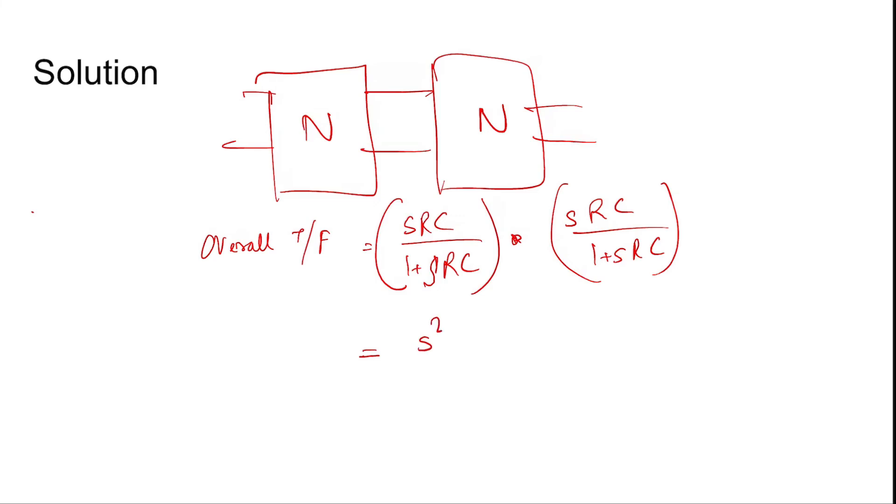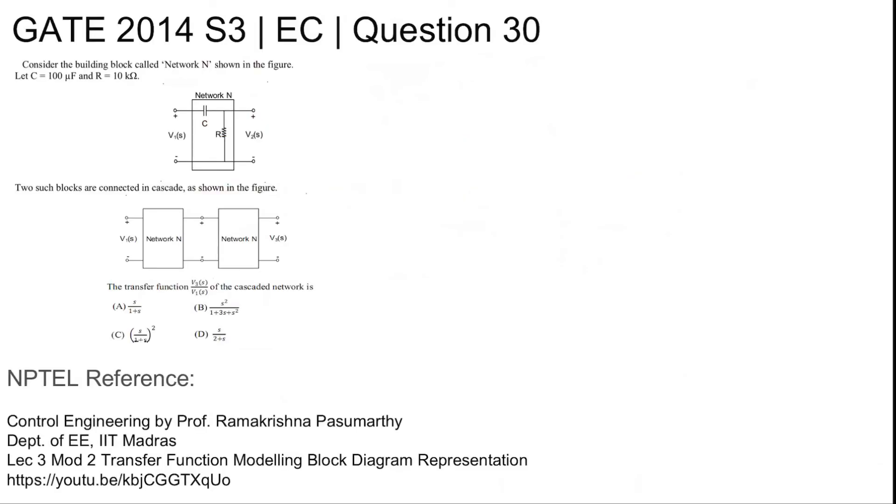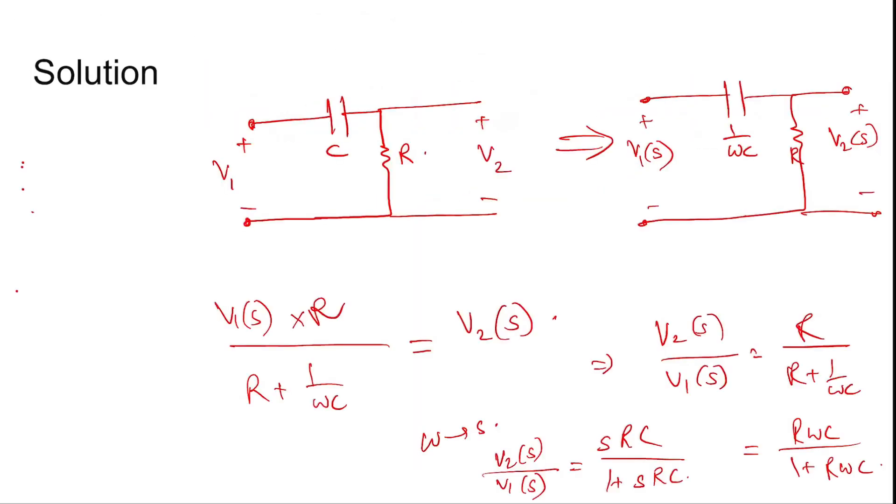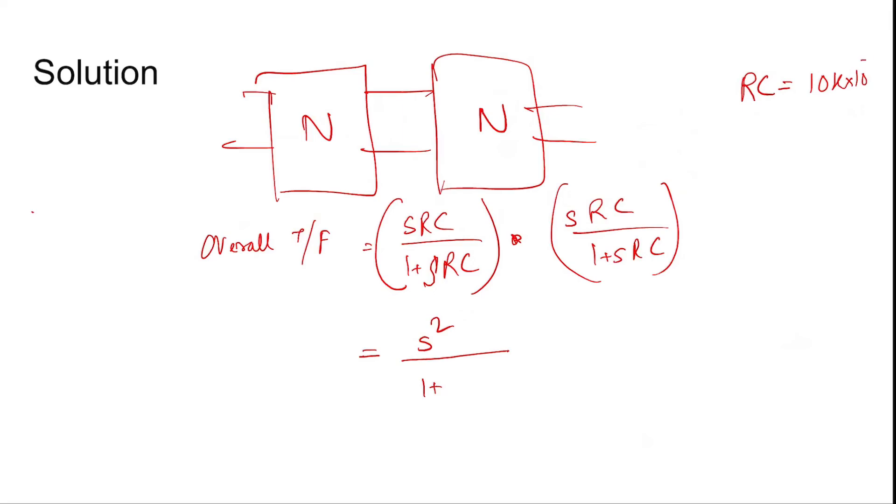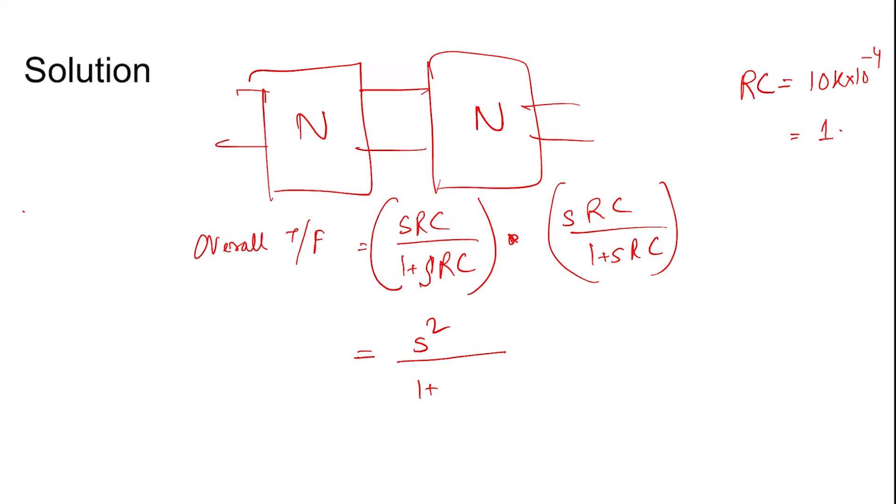And then we have s squared RC squared divided by 1 plus sRC whole squared. Now find the value of RC. R is 10 kilohm, C is 100 microfarad, so 10 to the power 4 times 10 to the power minus 4, so it is 1. The value of RC is 1.